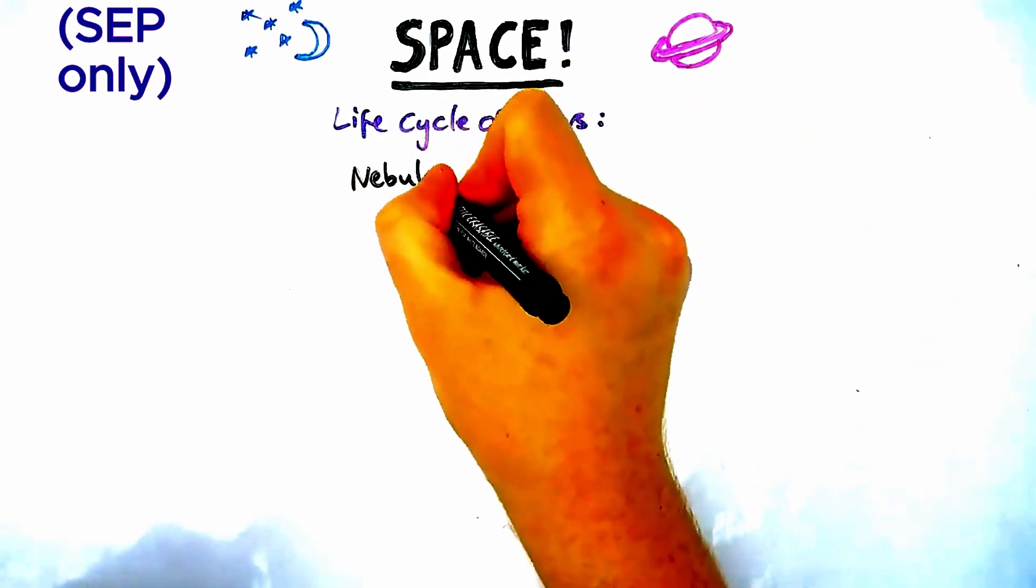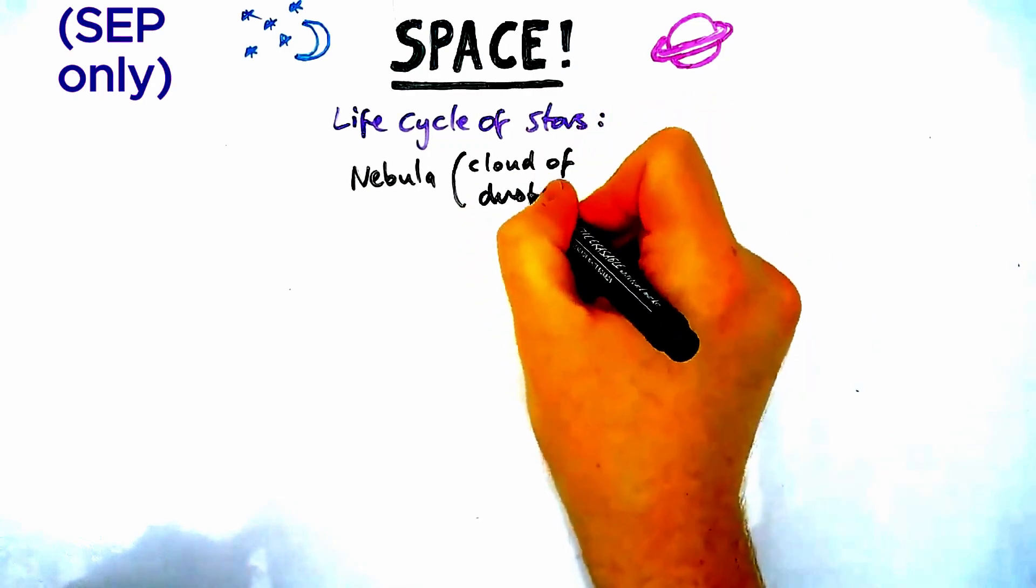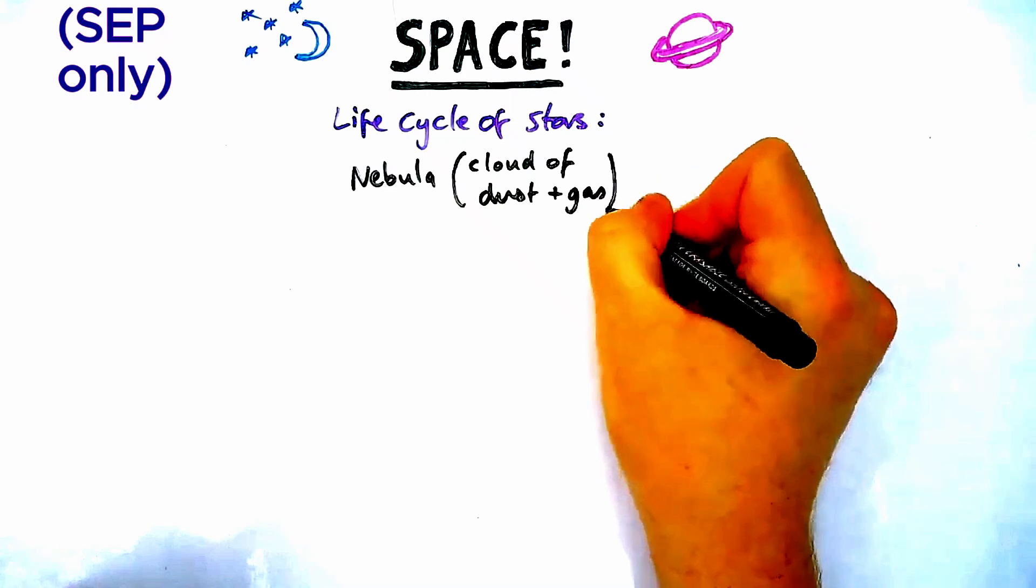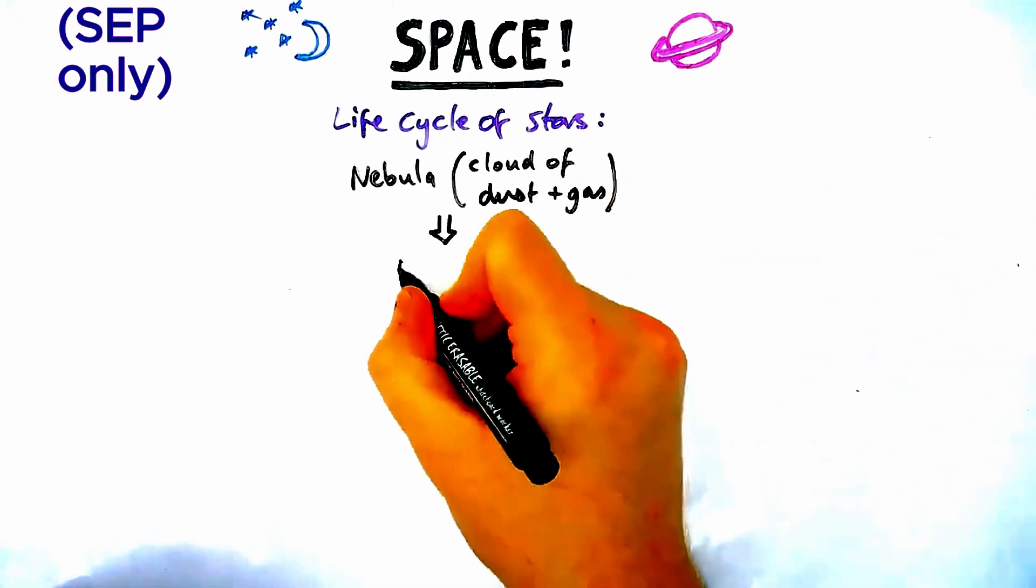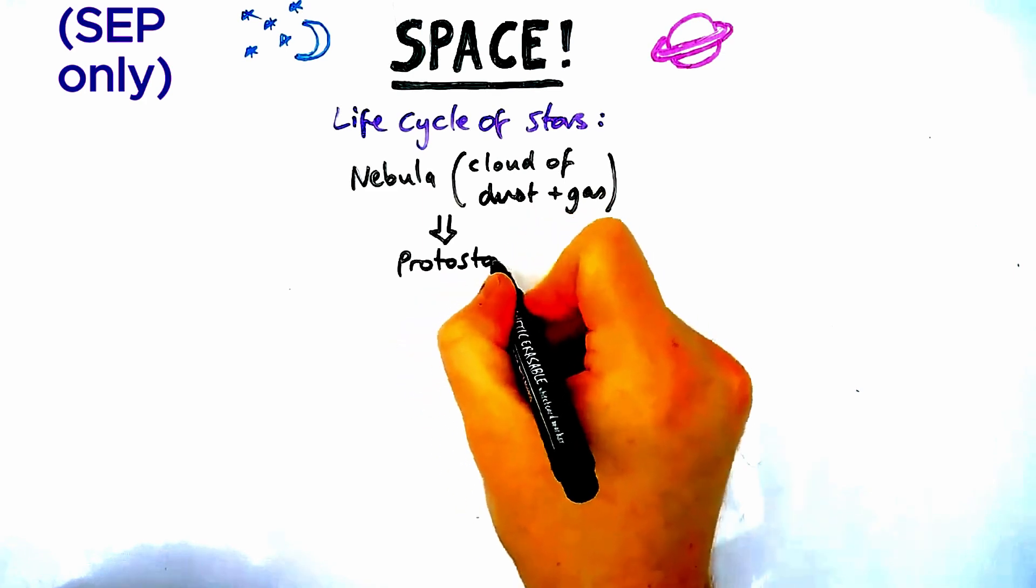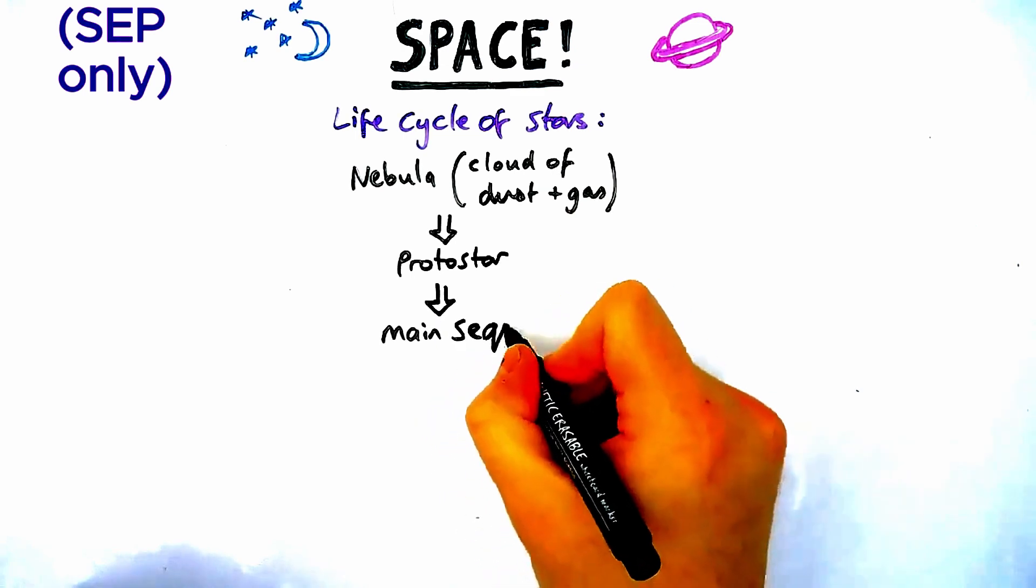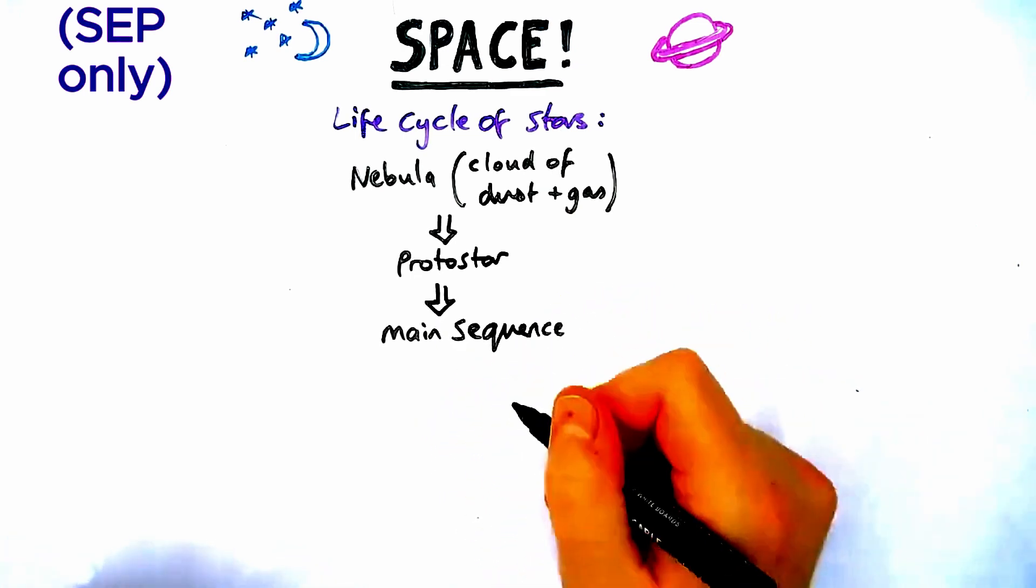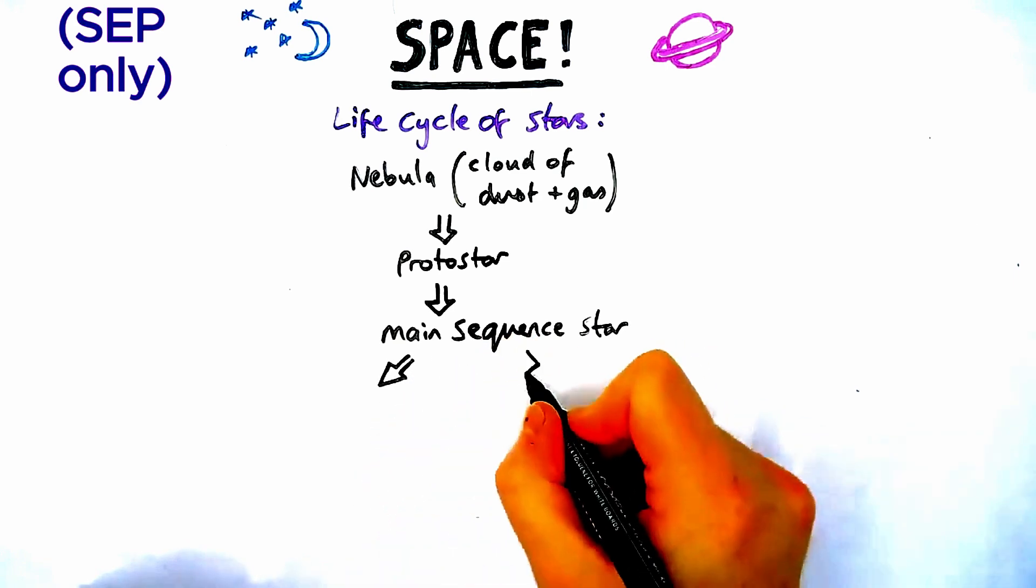Stars start off and form as a nebula, which is a fancy name for a cloud of dust and gas and bits of atoms left over from other solar systems. When they come together, they form a protostar. After a protostar has existed for a period of time, it becomes a main sequence star.